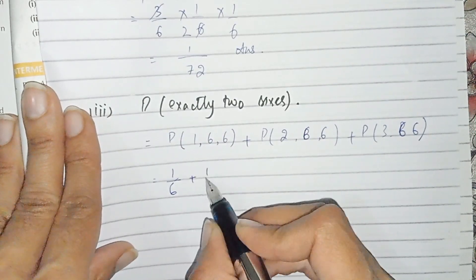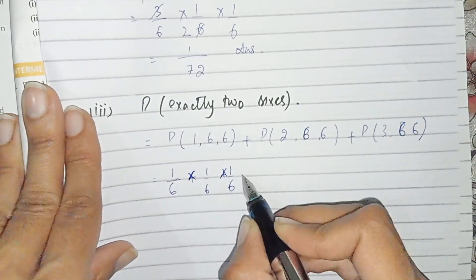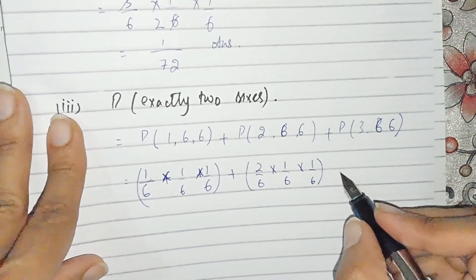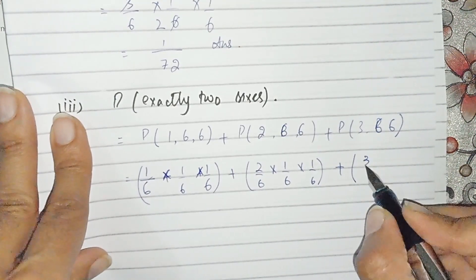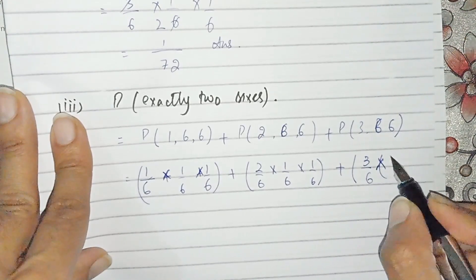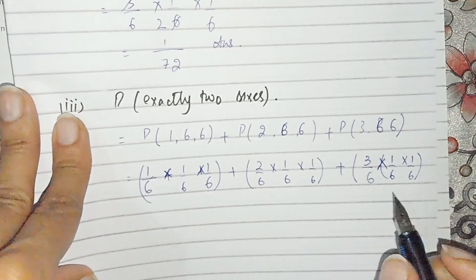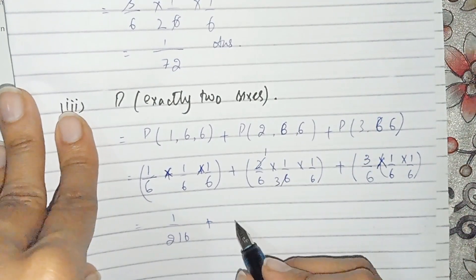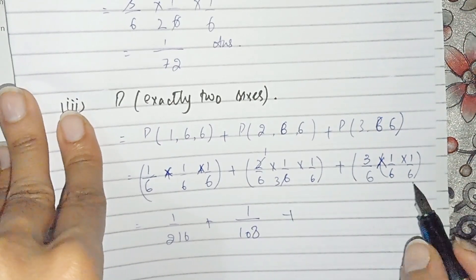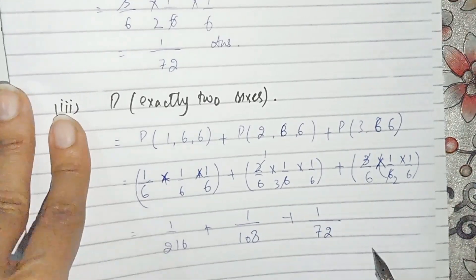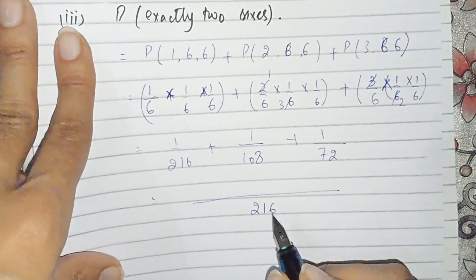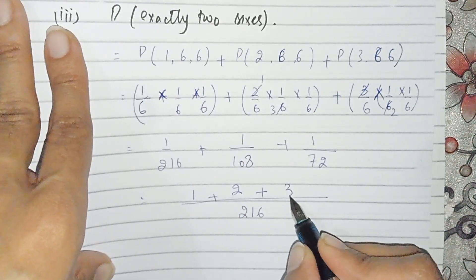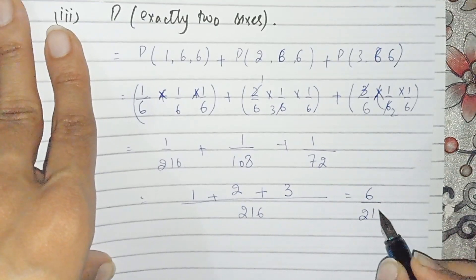For P(1,6,6): 1 over 6 times 1 over 6 times 1 over 6. For P(2,6,6): 2 over 6 times 1 over 6 times 1 over 6. For P(3,6,6): 3 over 6 times 1 over 6 times 1 over 6. Computing each and taking the LCM of 216: we get 1 over 216, plus 2 over 216, plus 3 over 216, totaling 6 over 216.